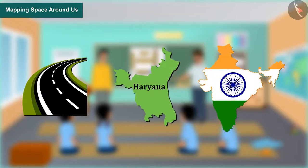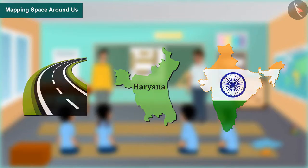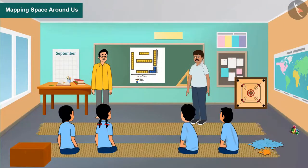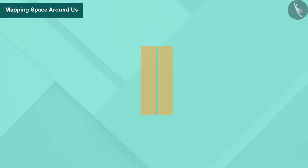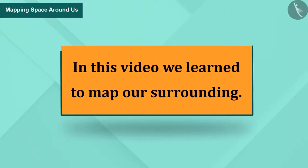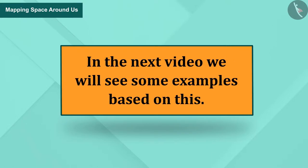Similarly, maps of roads, provinces, cities, and countries are also used for planning and management. I hope that you have understood the method of map making and its nuances. See you, bye. In this video we learned about mapping the places around us. In the next video we will see some examples based on this.